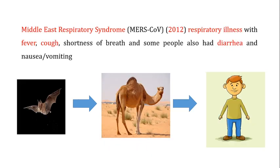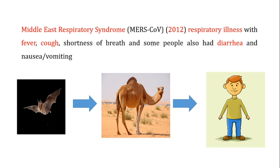The second case from this family was Middle East Respiratory Syndrome in 2012 in the Middle East. It also caused respiratory illness with fever, cough, shortness of breath, and some people also had diarrhea, nausea, and vomiting. The theory for its origin is that it came from bats to camels, and from camels it was transferred to human beings.